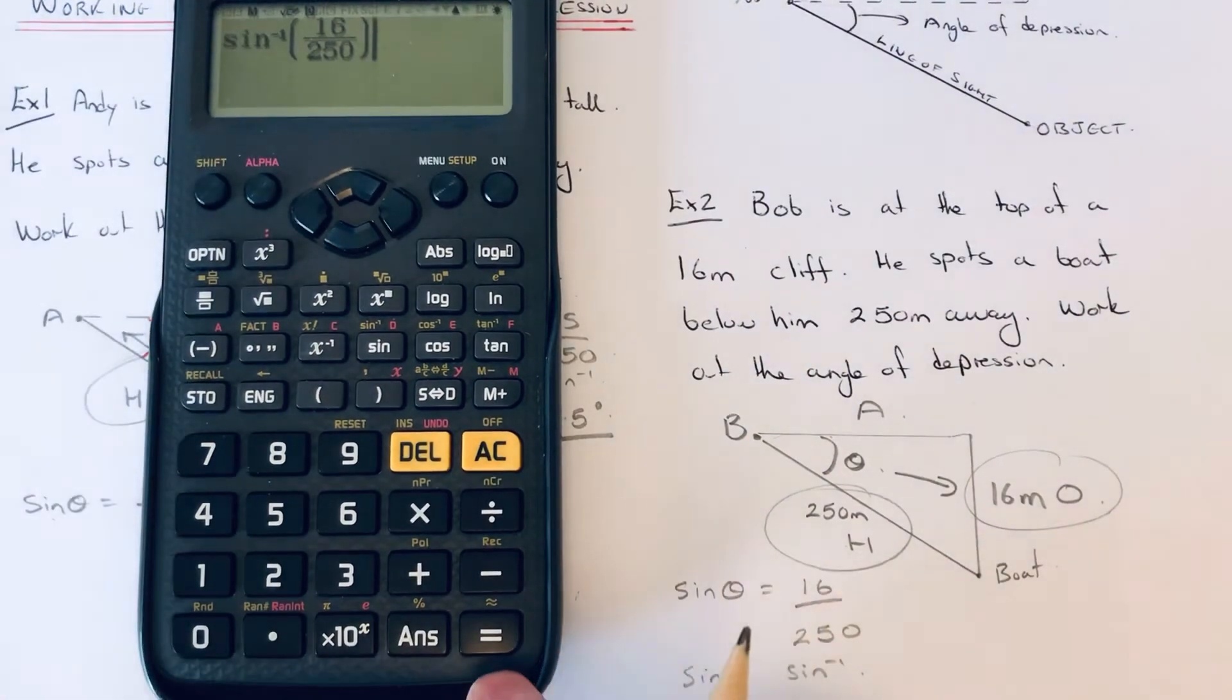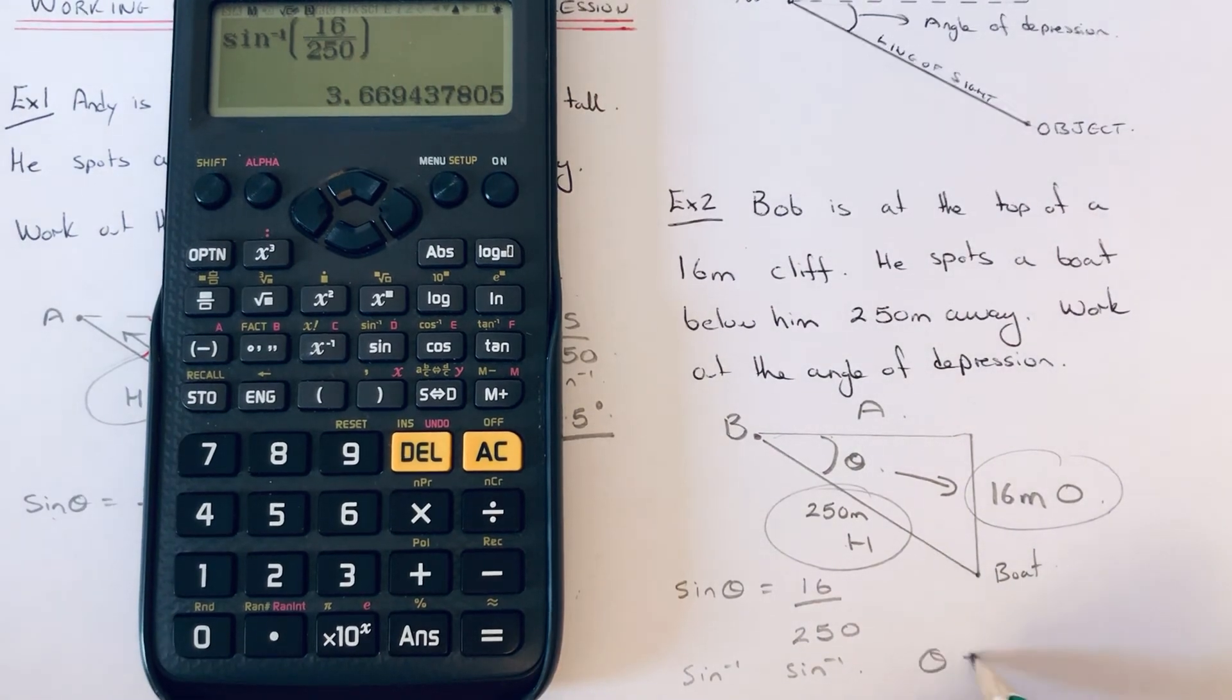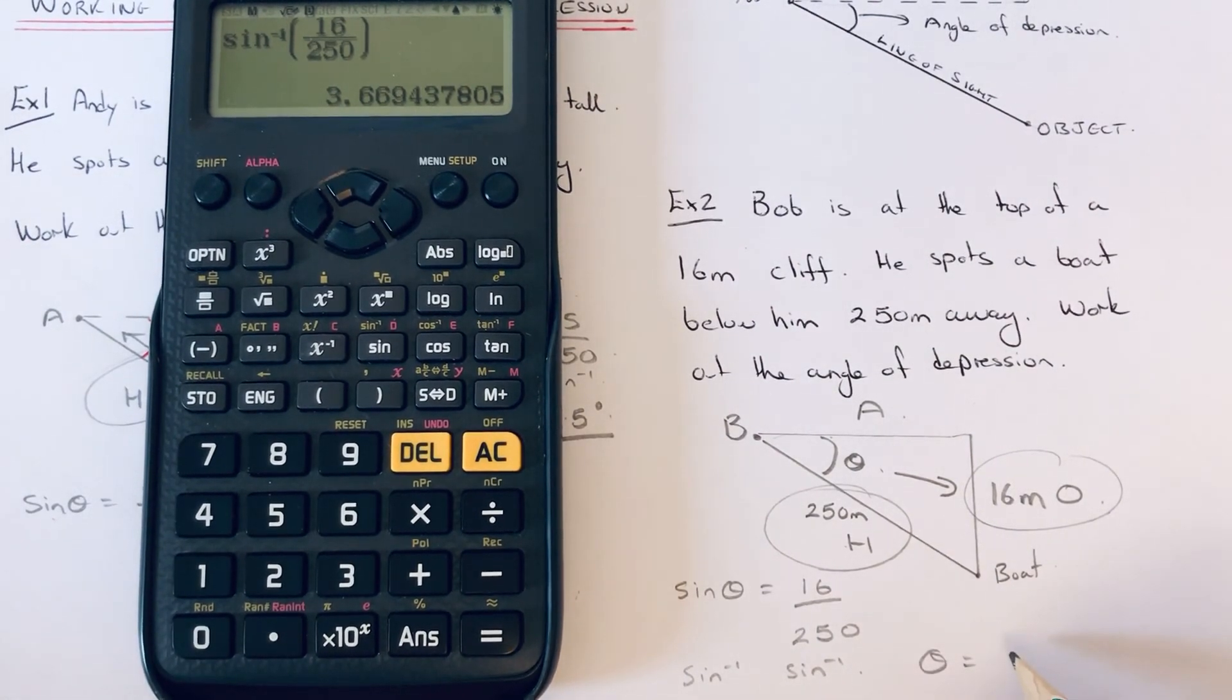It doesn't really matter if you close your bracket. I didn't do it on the first one. You still get the same answer. And our angle of depression is 3.7 degrees. Not very big on this one.